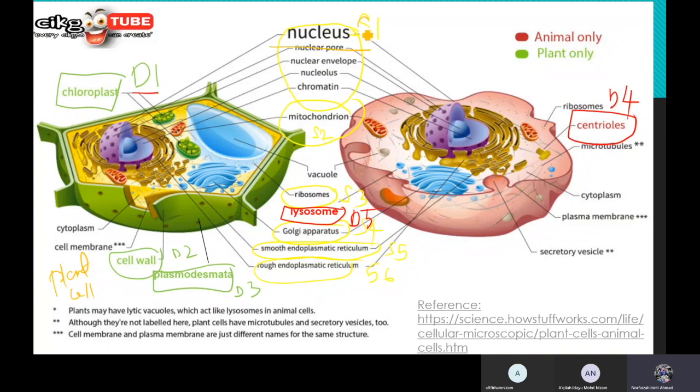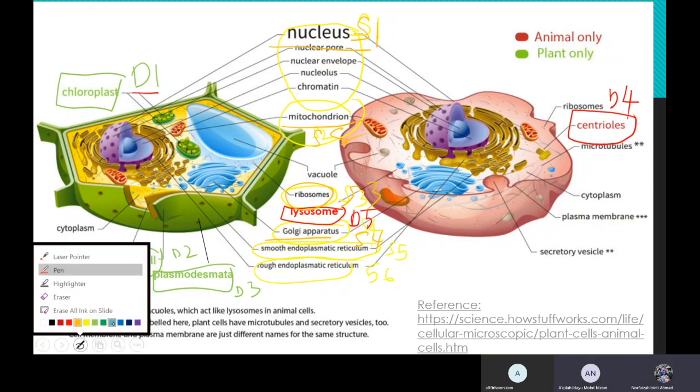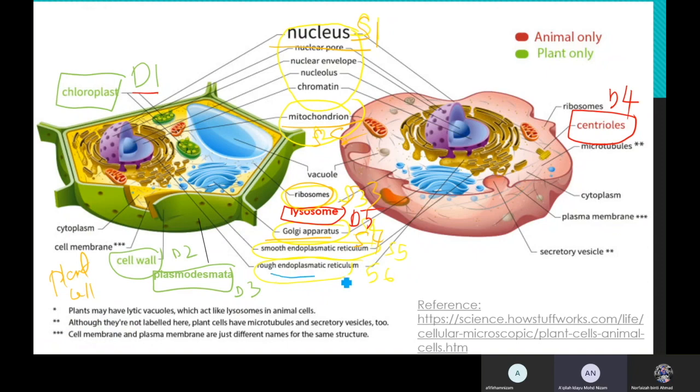There are many similarities for these two cells. Previously we have learned nucleus is S1, mitochondria is S2, ribosome is S3, Golgi apparatus is S4, smooth endoplasmic reticulum, and also rough endoplasmic reticulum. Very good.